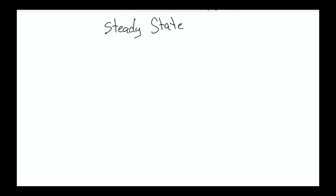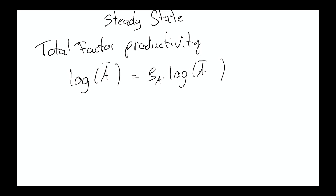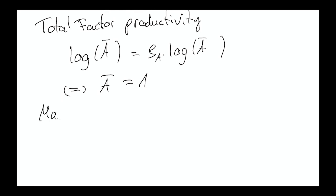This is again a fixed point in the absence of shocks, and this point is supposed to be such that all endogenous variables remain constant over time. Let's start with the steady state value of technology. A steady state by definition is in the absence of shocks, so we don't care about shocks here. We drop the time indices and denote variables in steady state with a bar. Rewriting this, we see that A-bar is equal to 1.